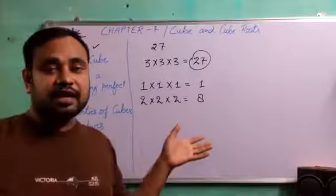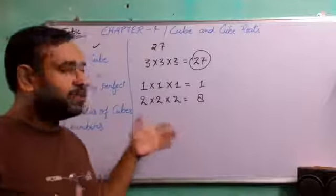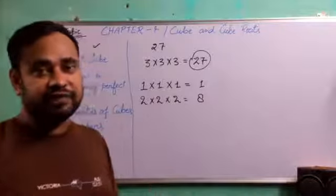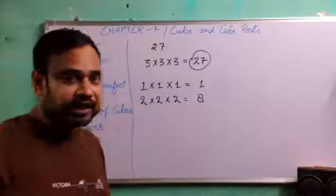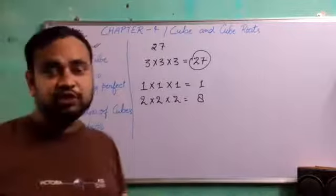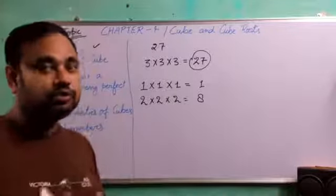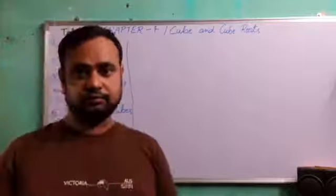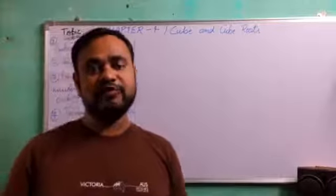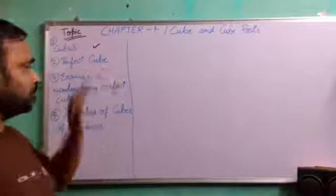So children, so many cubes numbers are there because natural numbers are infinite. So many cubes are there. I suggest you just to remember cubes of 1 to 10 always. Now let's move to our next topic that is perfect cube.